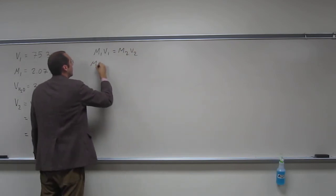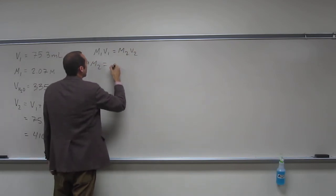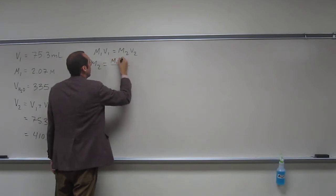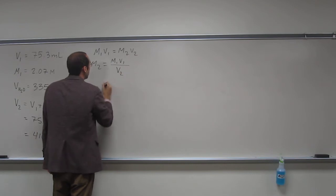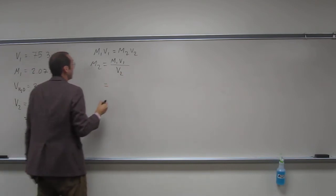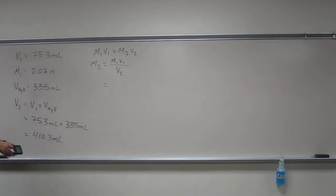Okay, we're looking for M2. So, isolate that variable. M1, V1 over V2. And we've got all of those things. So, normally we would like these in liters, these volume units. But since they're both in milliliters, we don't have to worry about them because they'll cancel each other out.